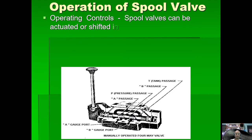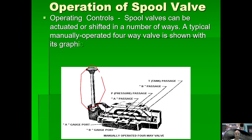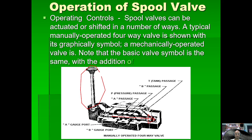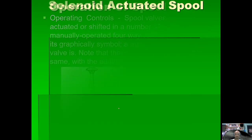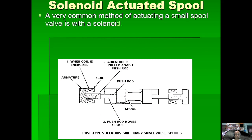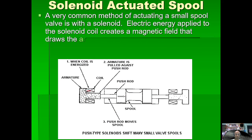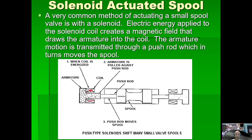With a lever-actuated spool: pushing the lever moves the spool to the right; releasing the lever allows the spring to push the spool back to its original position. For a solenoid-actuated spool: when electricity energizes the coil, the armature is attracted in and the spool moves to the right. Energizing the solenoid on the other side pushes the spool back to the left.